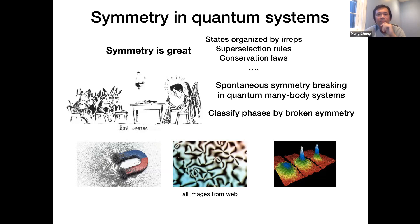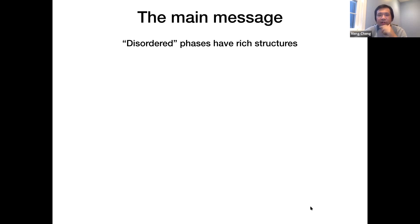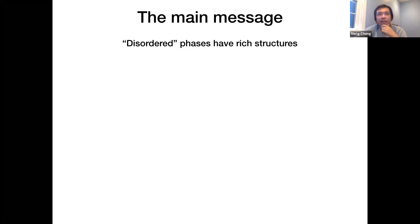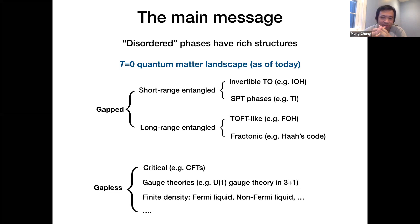On the other hand, when there's no symmetry breaking — a disordered state — it was believed for a long time that such states are fairly boring or featureless. But it turns out that these disordered phases in fact have a lot of rich structures. This is the main thing I want to discuss in this talk. There's a quite ambitious research program going on to classify and characterize such disordered phases, and I'll show a kind of map of what we currently know about zero-temperature quantum matter.